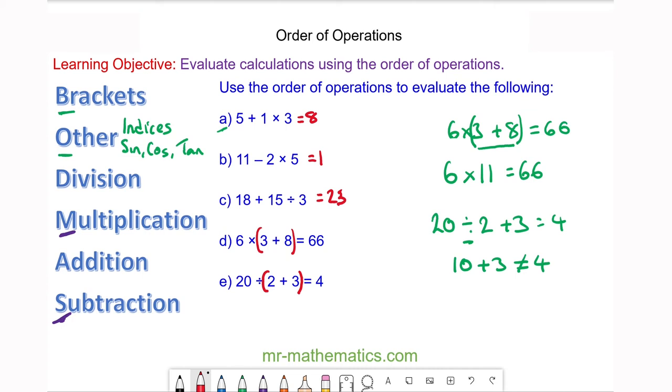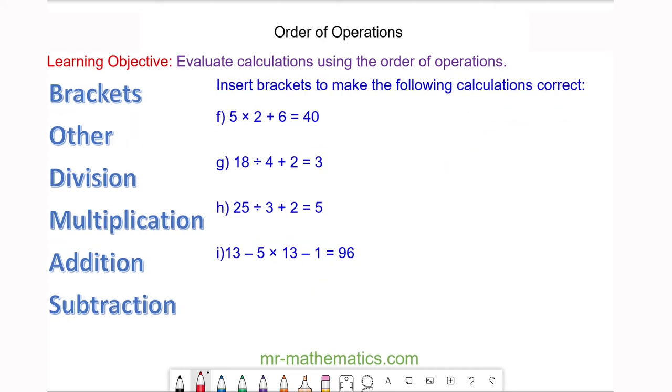Let's try some more questions. Do you want to insert brackets into the following calculations to make them correct? You can pause the video and resume it when you're ready. For question f, we have the bracket before the 2 and after the 6. We can check this: we have 5 × (2 + 6), which is 8, and that does make 40.